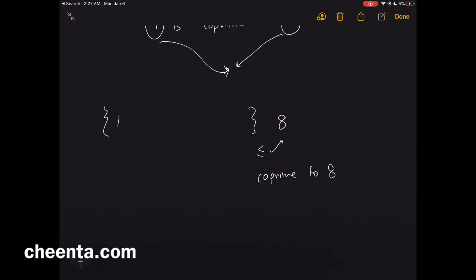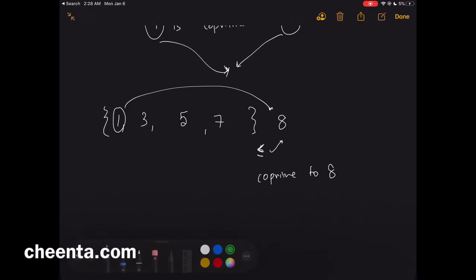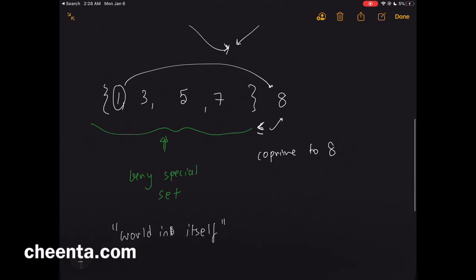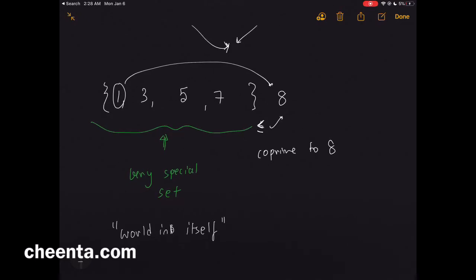Those numbers are one, three, five, and seven. All of these are co-prime with eight and less than or equal to eight. This set is very special — I think about it as a world in itself. Euler's Totient function is usually denoted by the letter phi, and phi of a number is the count of members in this set. So phi of eight is four.